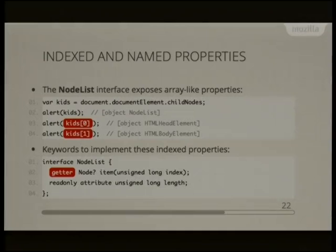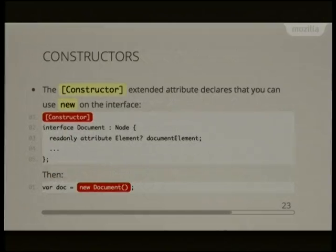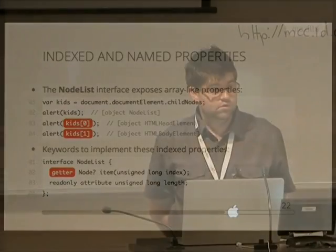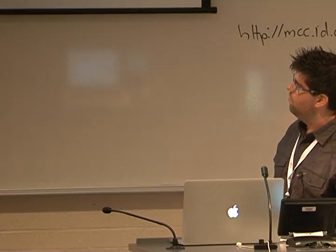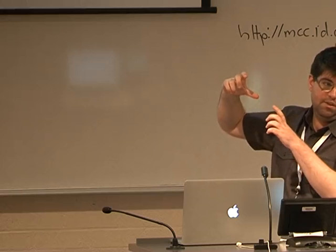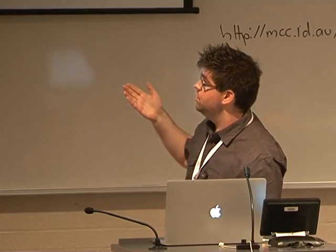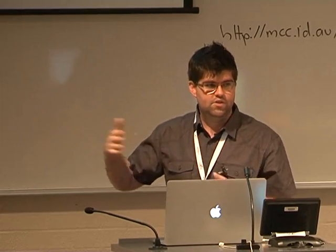In Web IDL, there's a getter keyword that you can attach to an existing IDL operation to say that when you access an array-index property, under the hood it invokes the behaviour of that operation. The item name shown is the name of an operation that already exists, so you can also call kids.item(n) directly — which is how you'd use it in a language that didn't have array-index-like property access.